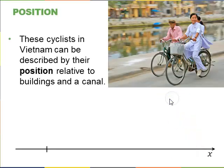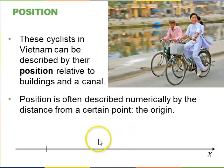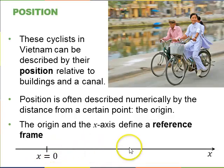So we start with position. These cyclists can be described by their position relative to these buildings and the canal. If you define an x-axis, you can numerically define your position as being your distance from the origin where x is 0. This origin and x-axis define a particular reference frame relative to which we can measure a position.